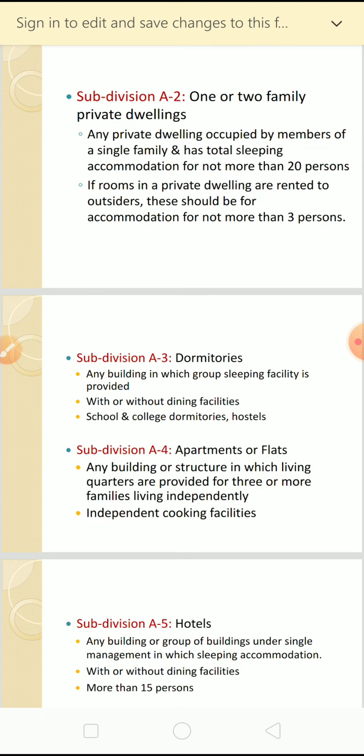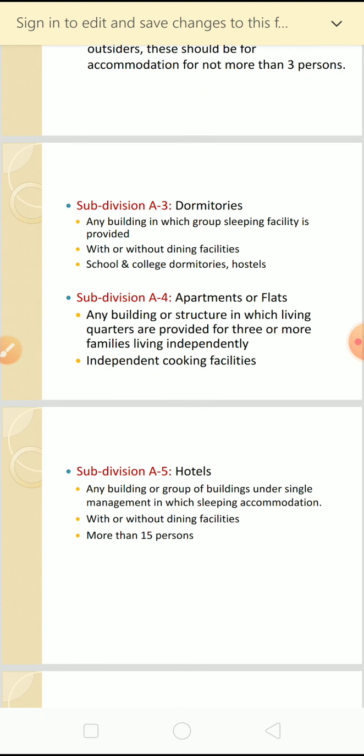A3 is dormitories - any building in which group sleeping facilities are provided, such as school or college dormitories and hostels. Dining facilities may or may not be provided, but individual cooking facilities are not available. Schools and college dormitories and hostels come into this subcategory.